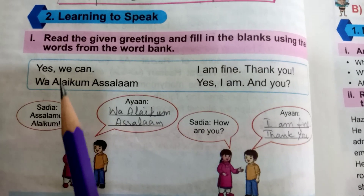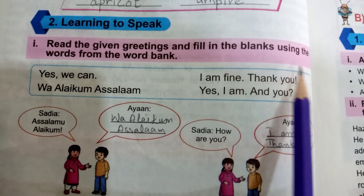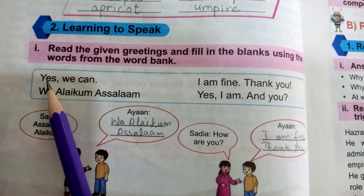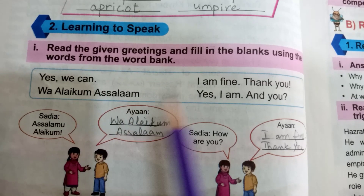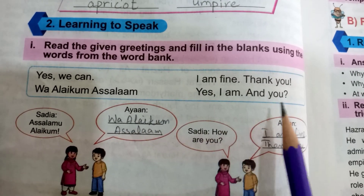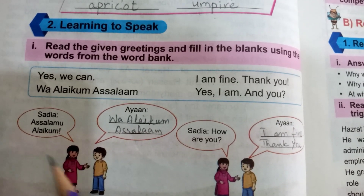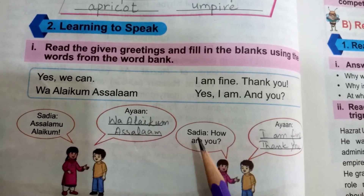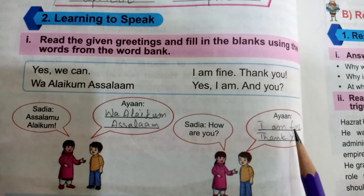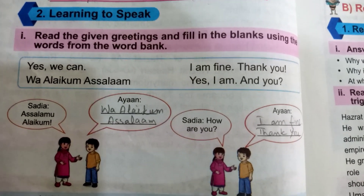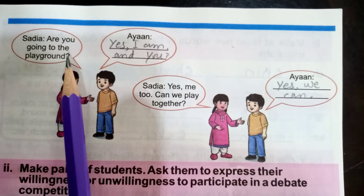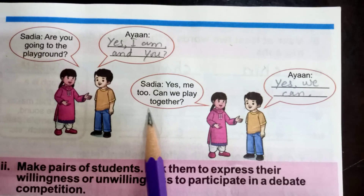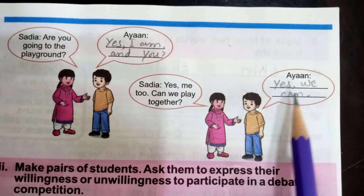Next question: read the given greetings and fill in the blanks using the words from the word bank. Words given are: yes we can, Ayaan, I am fine, thank you, yes I am and you. The dialogue: Assalamu Alaikum. Ayaan replies: Wa Alaikum Salam. Sadhya: Ayaan, how are you? Ayaan: I am fine, thank you. Sadhya: Are you going to the playground? Ayaan: Yes I am, and you? Sadhya: Yes, me too. Can we play together? Ayaan: Yes we can.